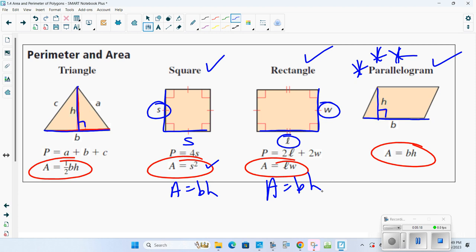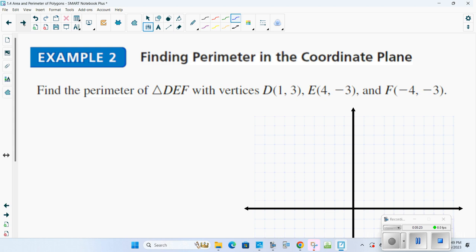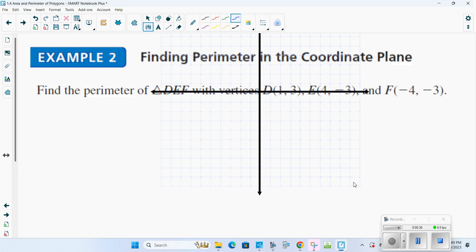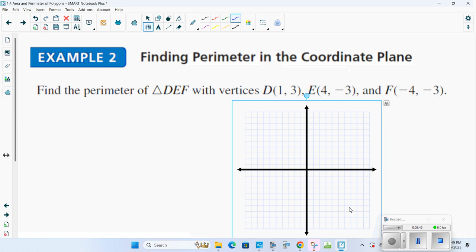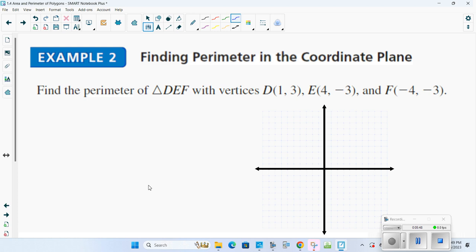With that being said, find the perimeter of triangle DEF with vertices D(1, 3), E(4, -3), and F(-4, -3). Now, I'm going to change my graph here a little bit. My graph is a little bit bigger than I would like, so I'm going to fix that. All right, so I'm going to plot the points. 1, 3. 4, -3. And -4, -3. Plotting those points and labeling. So this would be D, this would be E, and this would be F.